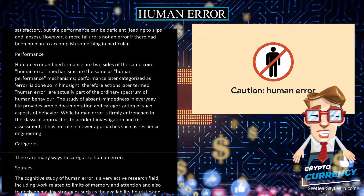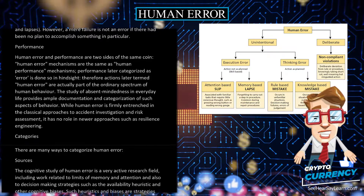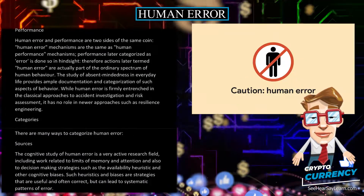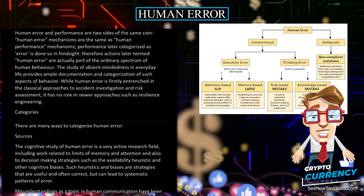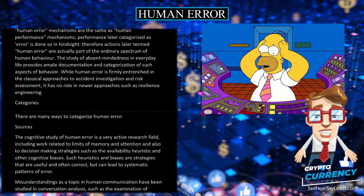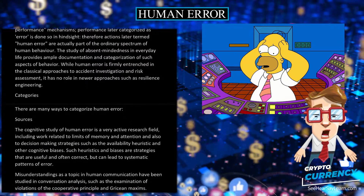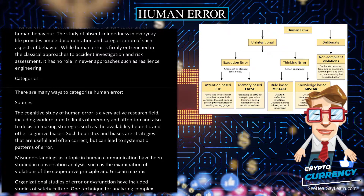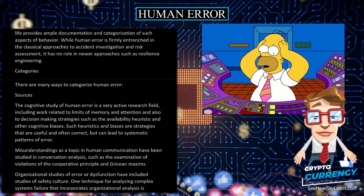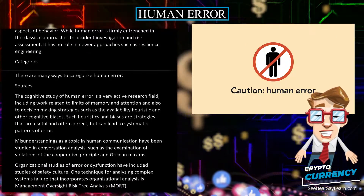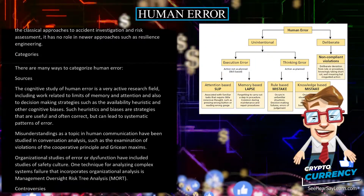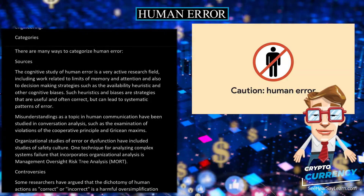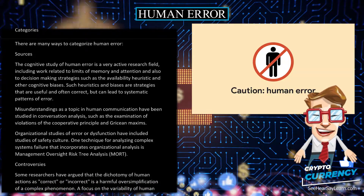While human error is firmly entrenched in classical approaches to accident investigation and risk assessment, it has no role in newer approaches such as resilience engineering. There are many ways to categorize human error. The cognitive study of human error is a very active research field, including work related to limits of memory and attention and to decision-making strategies such as the availability heuristic and other cognitive biases. Misunderstandings in human communication have been studied in conversation analysis, including violations of the cooperative principle and Gricean maxims. Organizational studies of error have included studies of safety culture, and one technique for analyzing complex systems failure is management oversight risk tree analysis, or MORT.